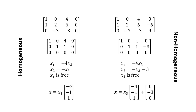Now we're going to write these solutions in parametric vector form. On the left we have the form that we learned about in Lecture 10, and on the right we notice that we have some of the same elements, but we've got an additional vector that we have to add. On the left our solution is x equals x3 times the vector (-4, -1, 1), and on the right our solution vector x equals x3 times (-4, -1, 1) plus the vector (0, -3, 0). Notice that there's no variable multiplied by (0, -3, 0) — that's just a static vector added to our previous solution.